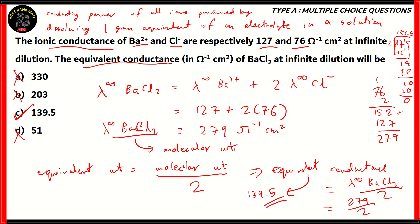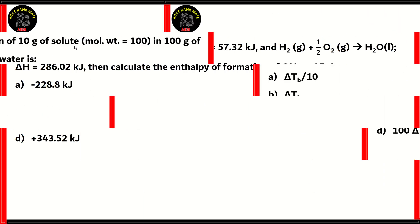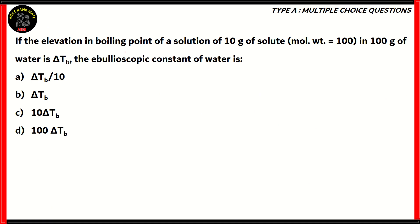Let's move on to the next question. If the elevation in boiling point of a solution of 10 grams of solute with molecular weight of 100 in 100 grams of water is delta Tb, this is our elevation of boiling point, by the way, you need to find the ebullioscopic constant of water, which is represented by Kb.